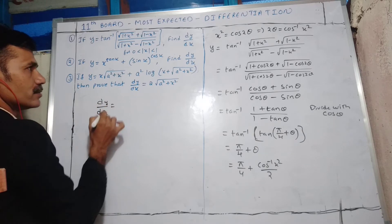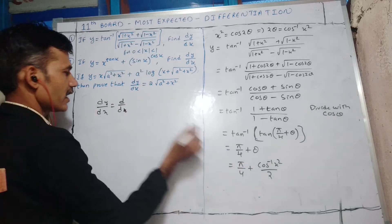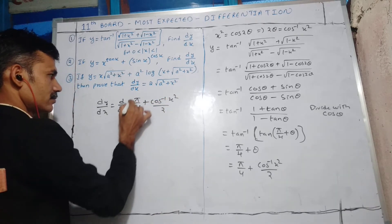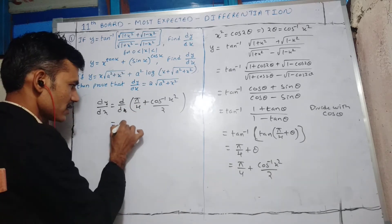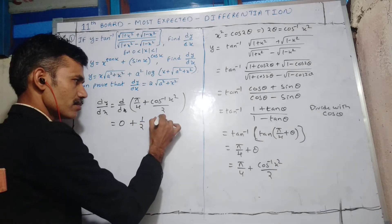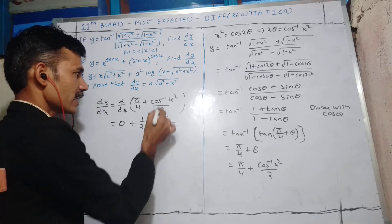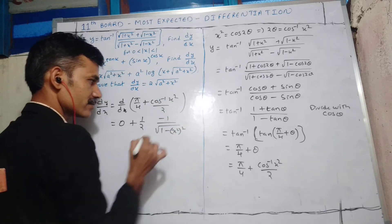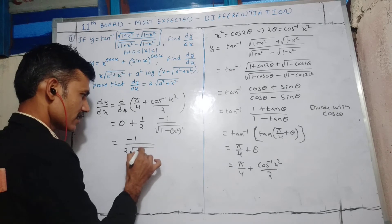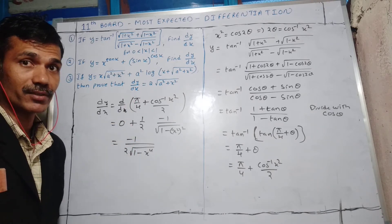dy/dx: the constant π/4 differentiates to 0. We have (1/2) times the derivative of cos⁻¹(x²). The derivative of cos⁻¹(x) is -1/√(1-x²). Applying the chain rule here gives dy/dx = -1 / [2√(1 - x⁴)]. This is the derivative.